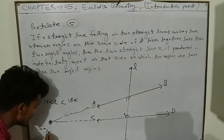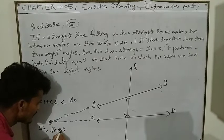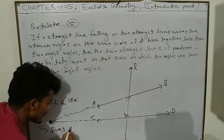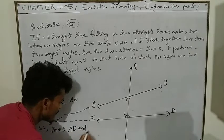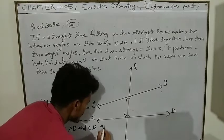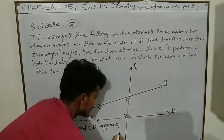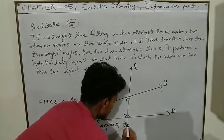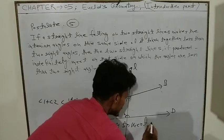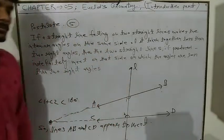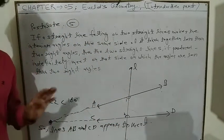Lines AB and CD appear to meet on the side where the interior angles are less than two right angles. This is Postulate Number 5.